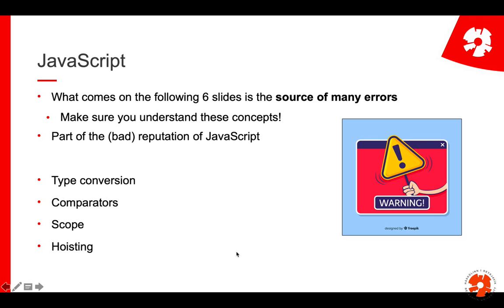That way you understand a bit more what JavaScript actually does in the background. And mainly these relate to type conversion — so conversion between variable types — comparators, so how to compare one value to another, the scope within JavaScript that is a bit different from many programming languages, and a concept called hoisting in JavaScript. We'll go through them on the next six slides.